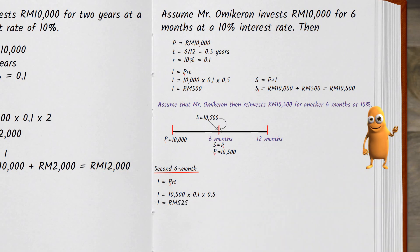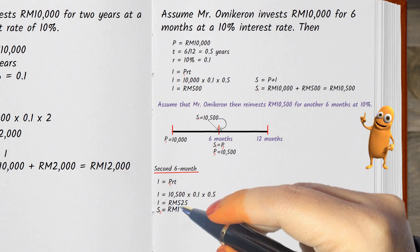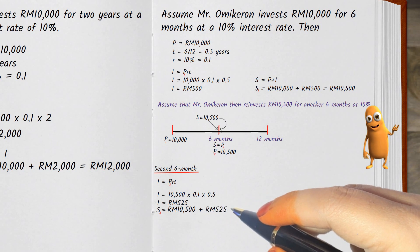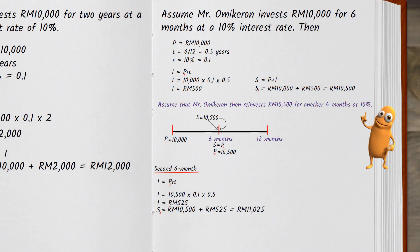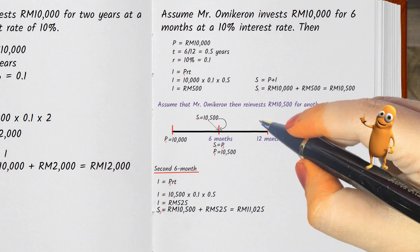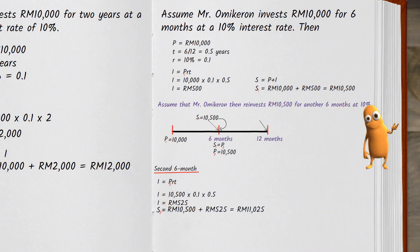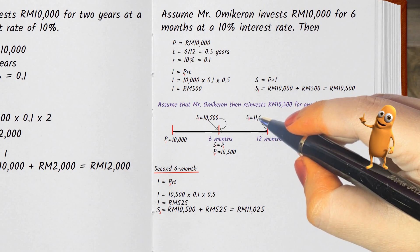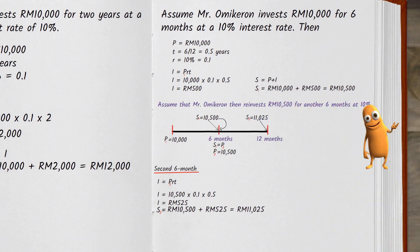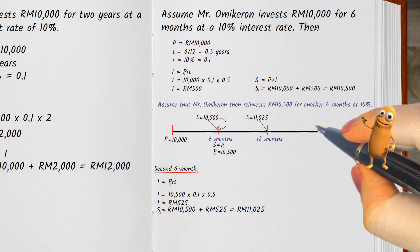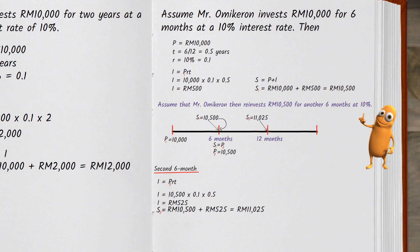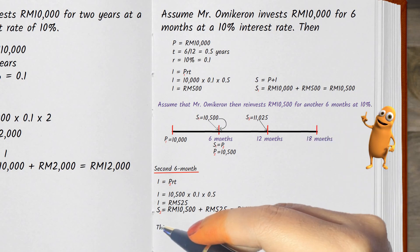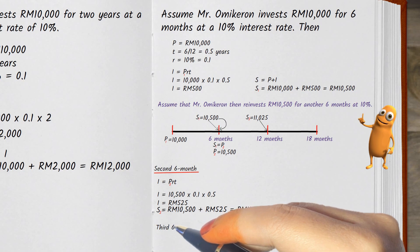He would earn RM525 on his second investment. If this procedure were repeated each six months until two years had passed, Mr. Micron would have made four investments, and the computations would be as follows.